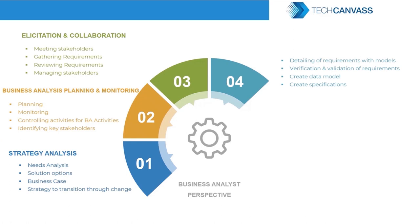The elicitation notes and documentation lead to the creation of process models, user stories, and other related visual models including prototypes, so that requirements can be developed and properly detailed out. These activities are described in the chapter Requirements Analysis and Design Definition. The business analyst has the responsibility of fully detailing out the requirements so they can be handed over to the technical team to design and develop the solution.